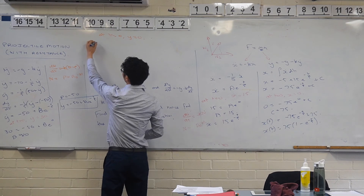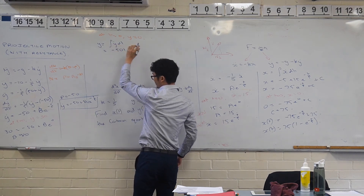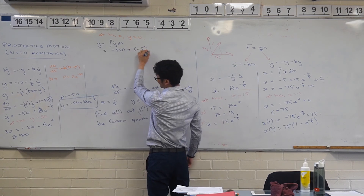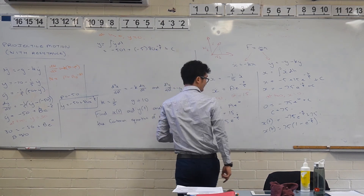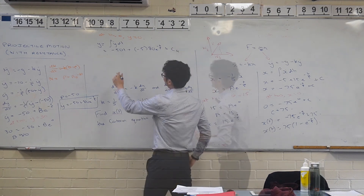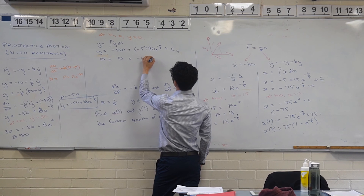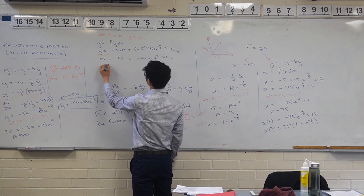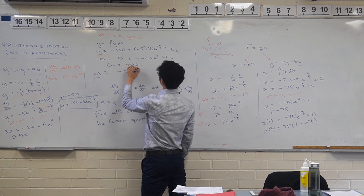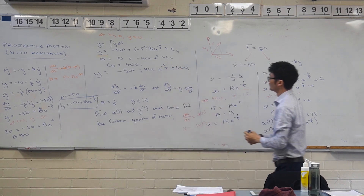At t equals 0, y equals 0. So I've got 0 is equal to 0 plus negative 400 e to the 0 plus c4, giving c4 equal to 400. So then you've got this lovely equation: y equals negative 50t minus 400 e to the negative t on 5 plus 400. Now, how could this help us? What was the original question, actually?